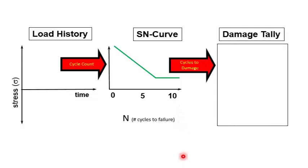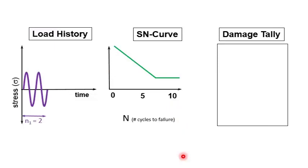To see how this works in practice, let's look at this time history. Here we can see we have two cycles at a certain stress level. If we look at that stress over in the S-N curve, we can see that it would normally take six cycles before this fails. So we have an accumulated damage now of two cycles out of six cycles, or 33% damage.